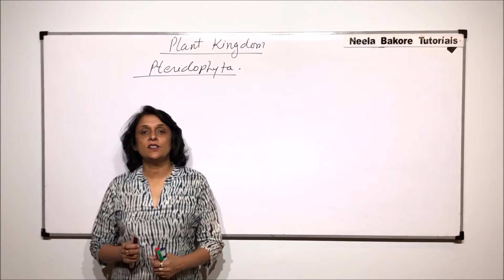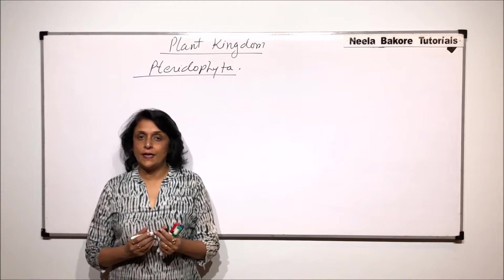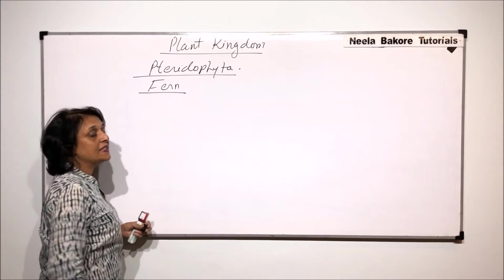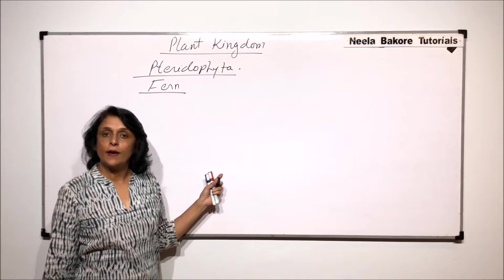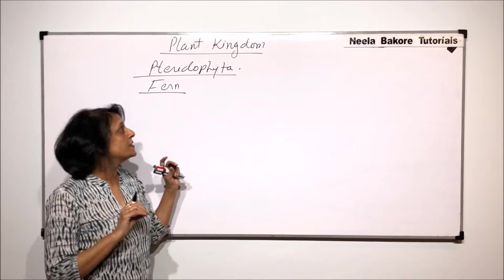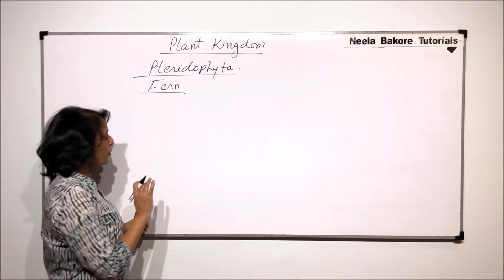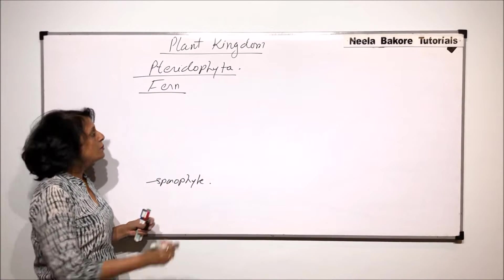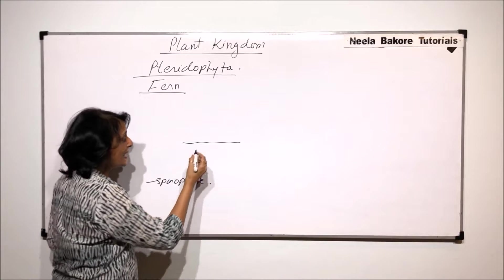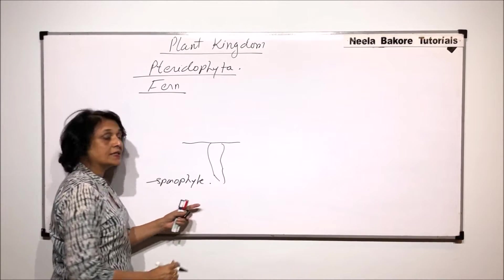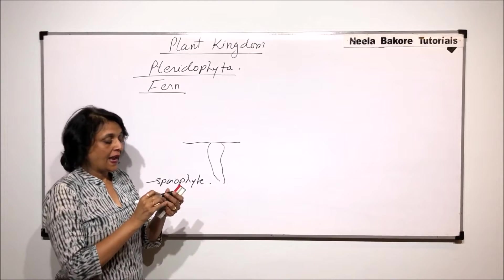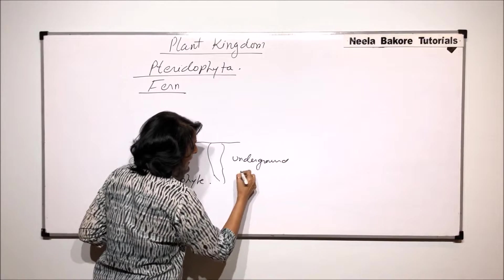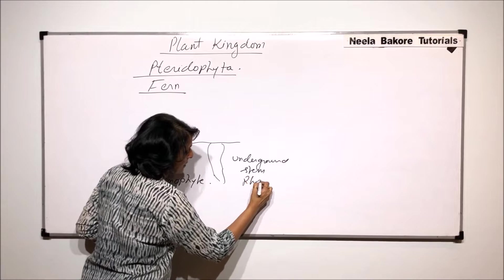In this video, we will study the detailed structure of the sporophyte of the pteridophyte, and we are talking about the example of the fern. Fern is a macrophyllous pteridophyte, meaning the leaves are bigger and the dominant stage is the sporophyte. The plant which is visible to us has a stem which is underground, and this stem goes vertically down — it is called the rhizome.